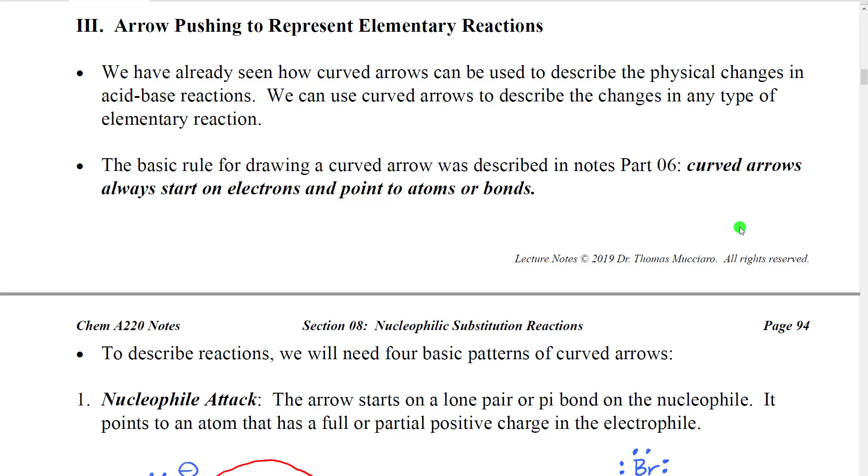Because we want to describe how atoms are moving and bonds are breaking and forming during a reaction mechanism, we're going to need a tool to sort of represent that so that we can communicate that. What we're going to use as our tool is arrow pushing or curved arrow formalism that we discussed in an earlier chapter. So in an earlier chapter we talked about drawing curved arrows to show how electrons and atoms move during a reaction. And there was a basic rule. Curved arrows always start on electrons and they point to either atoms or bonds showing where the electrons that we start on move to.